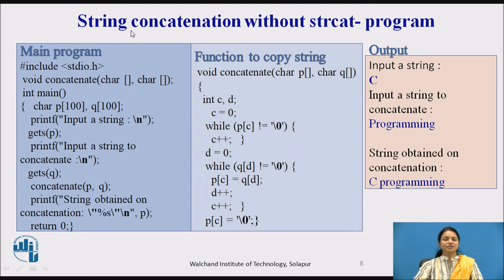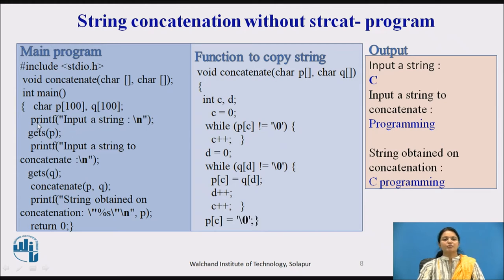Now we will see the user program. In the main program, we declare the function: void concatenate, taking character array string1 and character array string2. In main, we declare strings p and q. We print a prompt to input a string for p, then input a string for concatenation with q using gets(q). After getting both strings, we call concatenate(p, q). The function void concatenate takes character arrays p and q.